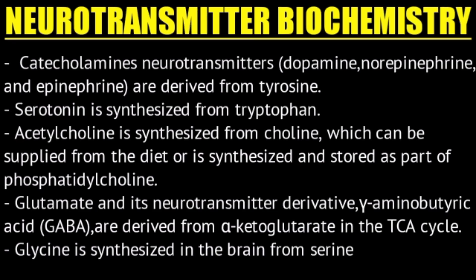Key precursors: catecholamines are derived from tyrosine; serotonin is synthesized from tryptophan; acetylcholine is synthesized from choline, which can be supplied from diet or stored as part of phosphatidylcholine; glutamate and its derivative GABA are derived from alpha-ketoglutarate in the TCA cycle; and glycine is synthesized in the brain from serine.